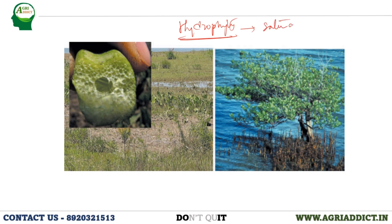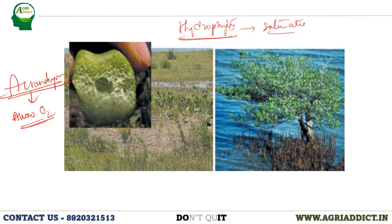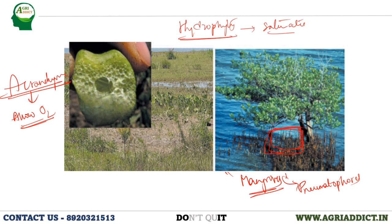Herbaceous hydrophytes have specialized cells called aerenchyma, which allow the passage of O2 into the cells so that aeration is not hampered. Similarly, mangroves have specialized upwardly projecting roots called pneumatophores. Pneumatophores directly uptake oxygen from the atmosphere and supply it to the mangrove tree. So plants living in water have special adaptations so that water and air relations are not disrupted.